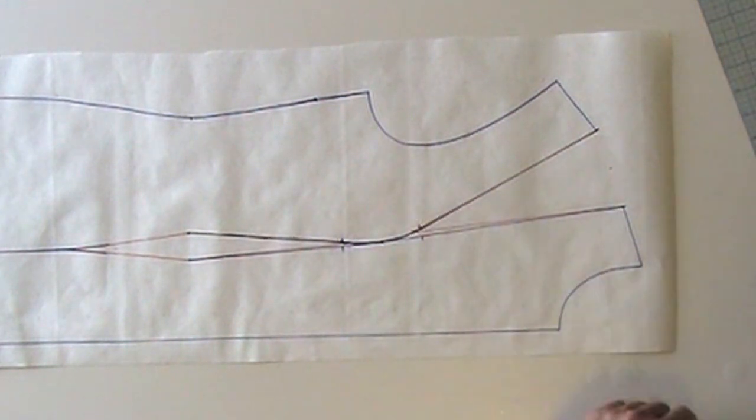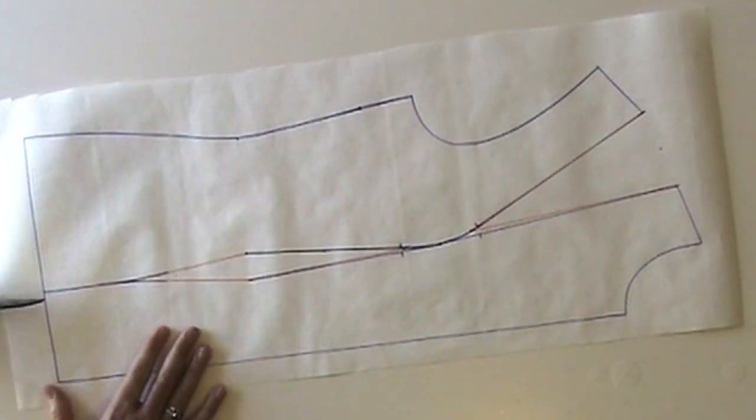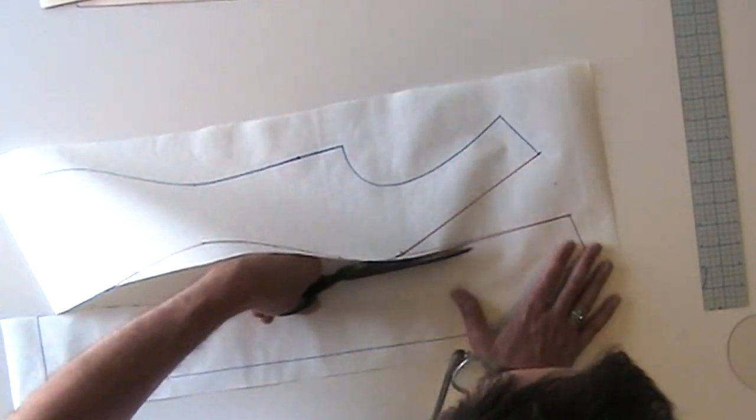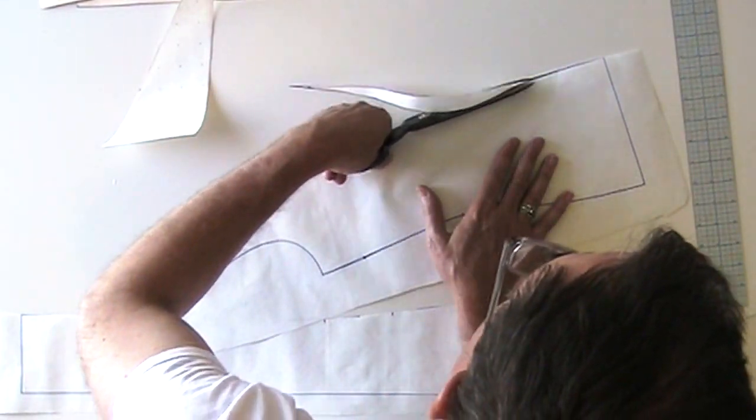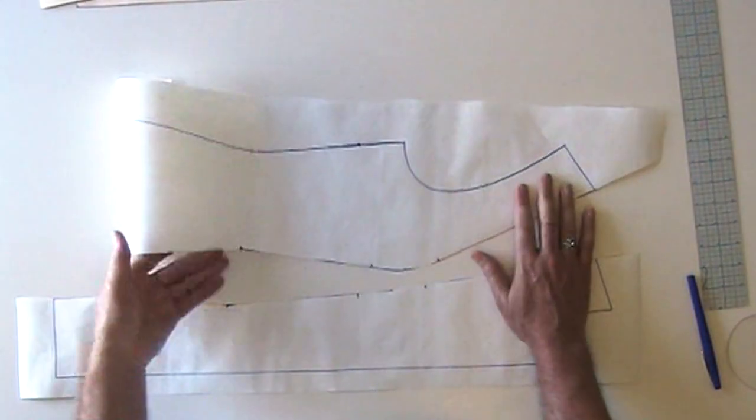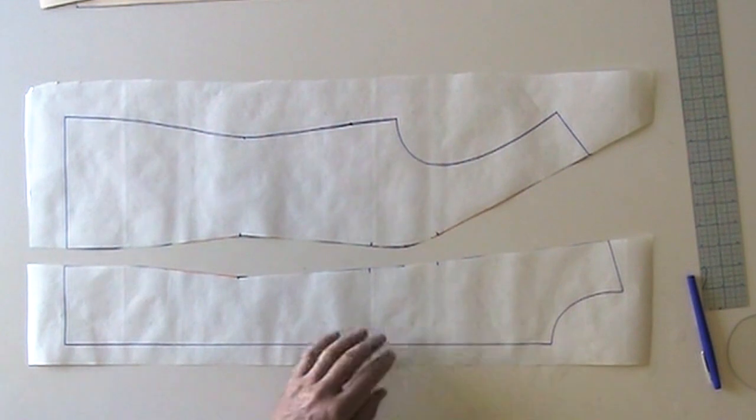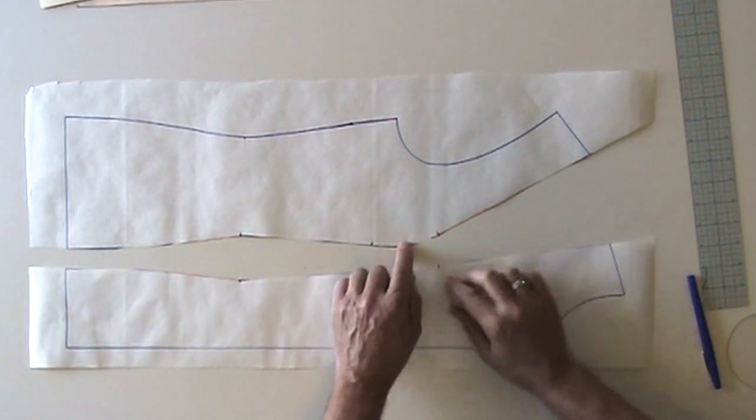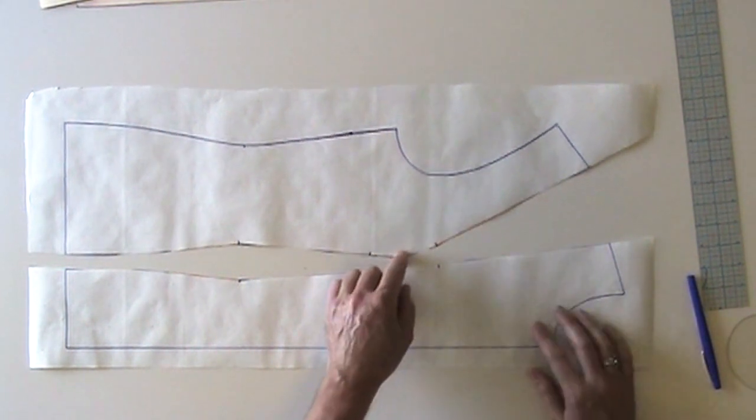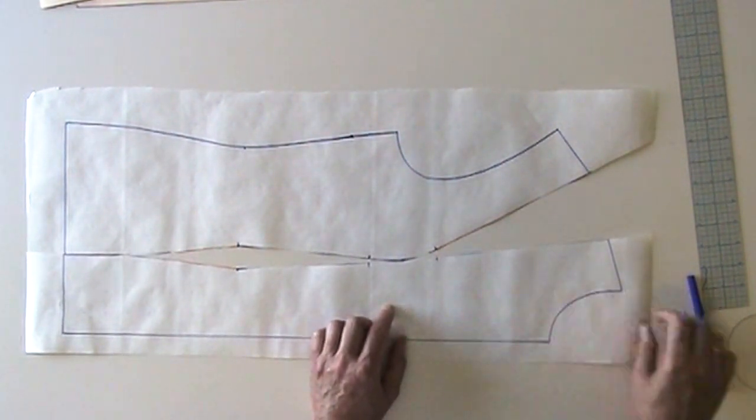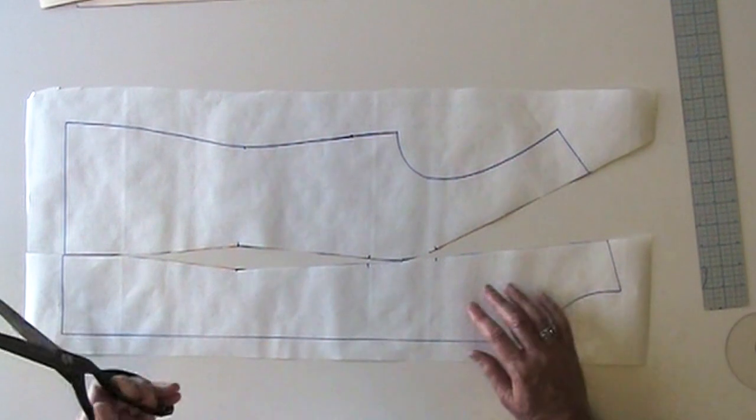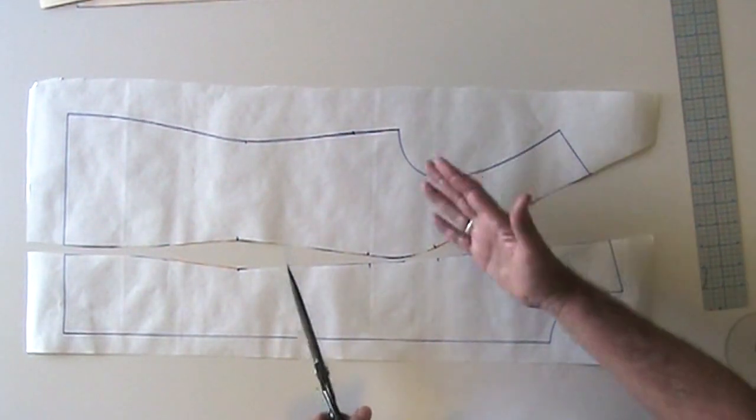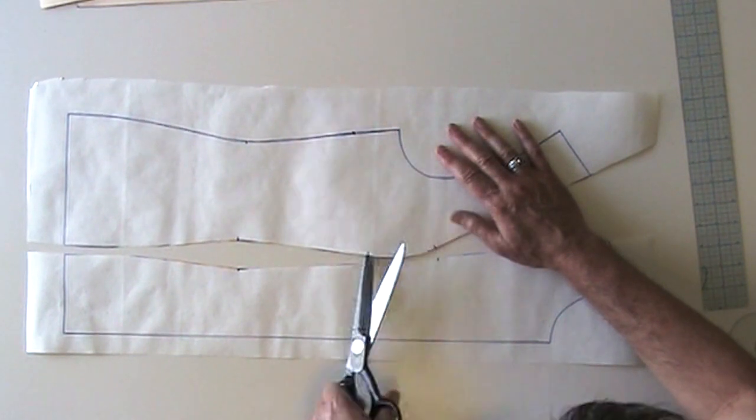Now I need to simply cut these two panels apart. Now that I've got these cut apart, I need to add a tiny bit of ease to my side panel at the bust. This is to keep it from coming too flat at the bust apex. I need a little roundness there. You may have seen this done before. You won't always do this, and I'll show you an example of where you're not going to do it later.